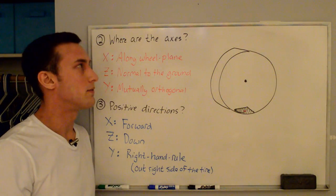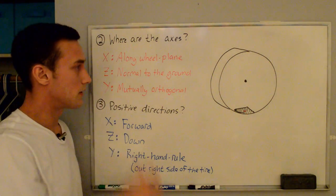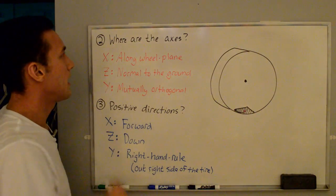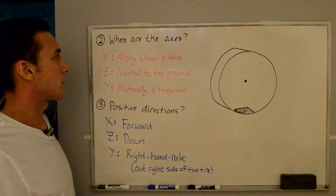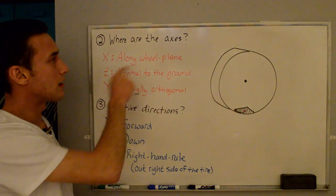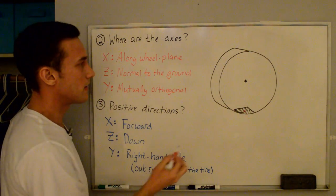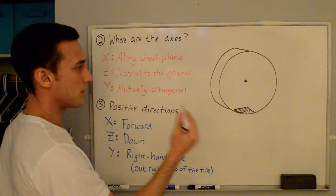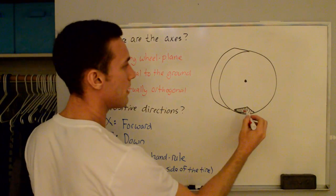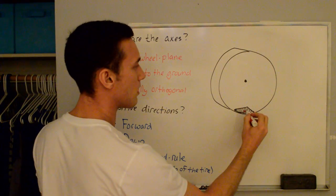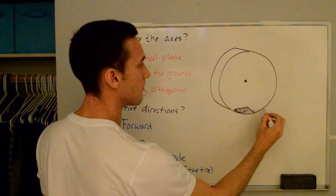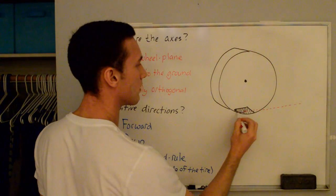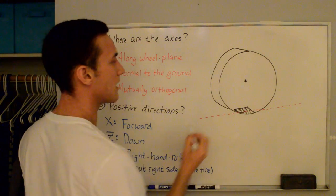So the second step is to define where these axes are located. We'll start with the X axis, and it's located along the wheel plane. I'm going to draw these axes with this marker here in red — and so we'll draw it something like this, and that's the X axis.